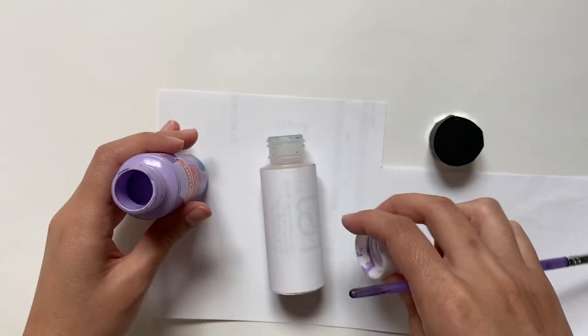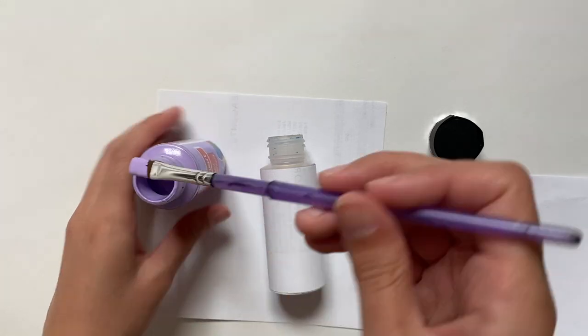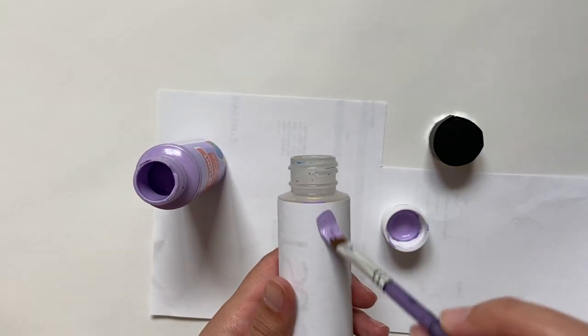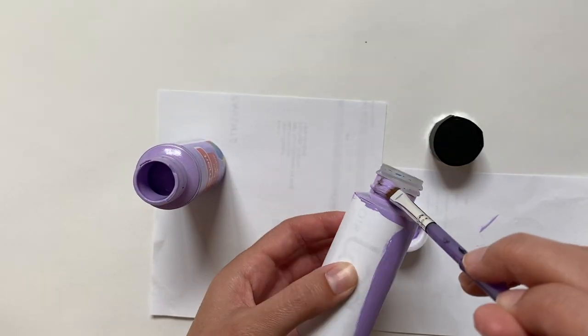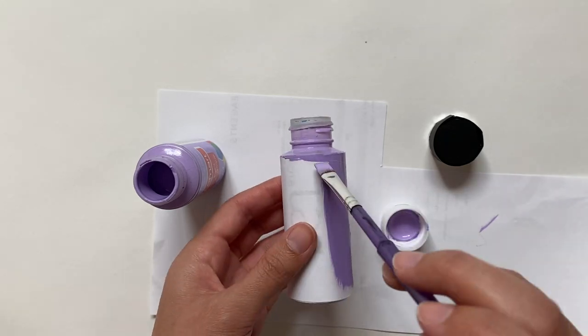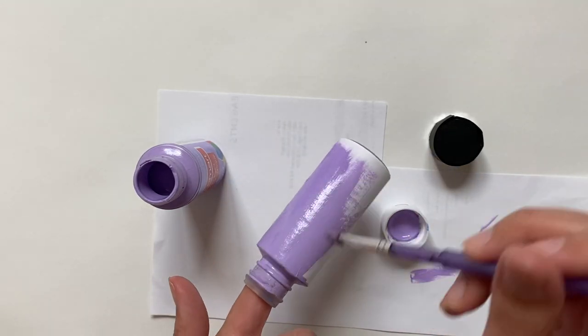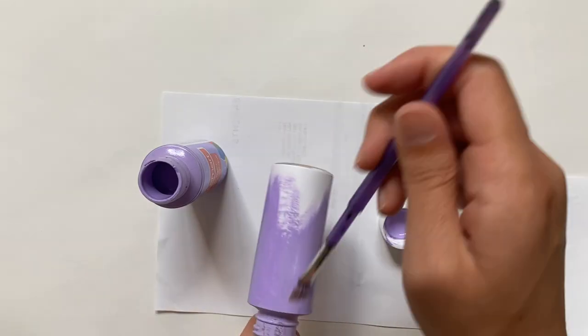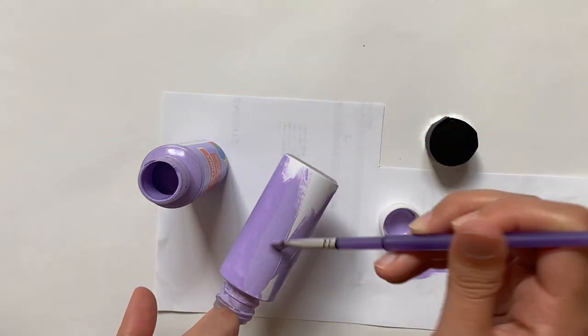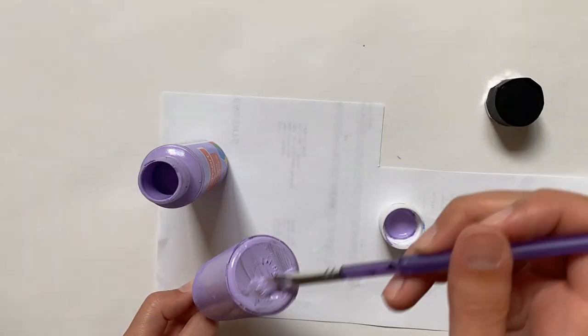I ended up going with this light purple. Also the colors name on the bottle is grape taffy, which is an amazing name. I wouldn't recommend painting over the part where the lid screws on like I am, because as you screw the lid on it'll kind of peel up the paint. I also painted the bottom since I knew it might not be fully covered in the end.